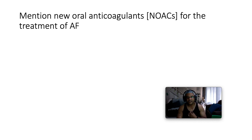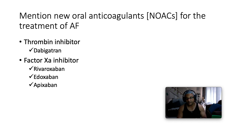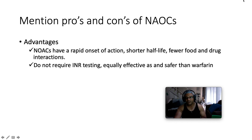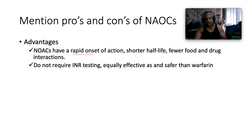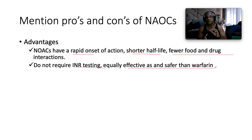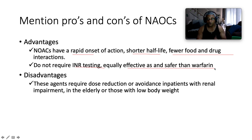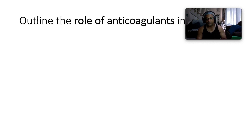The novel oral anticoagulants — NOACs — include the thrombin inhibitor dabigatran and the factor Xa inhibitors rivaroxaban (Xarelto), edoxaban, and apixaban. The advantages of NOACs are rapid onset of action, shorter half-life, fewer interactions with food and drugs, no requirement for frequent INR testing as with warfarin, and they are equally effective and safer than warfarin in non-structural heart disease. Disadvantages: these agents require dose reduction or avoidance in patients with renal impairment, the elderly, and those with low body weight.